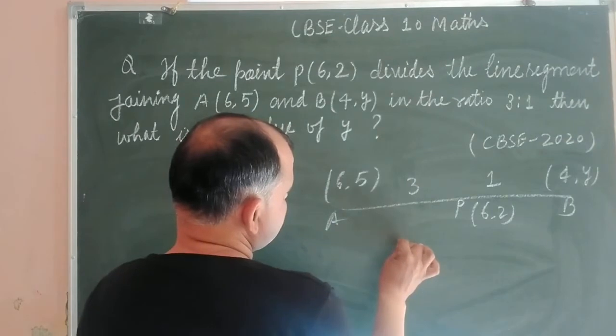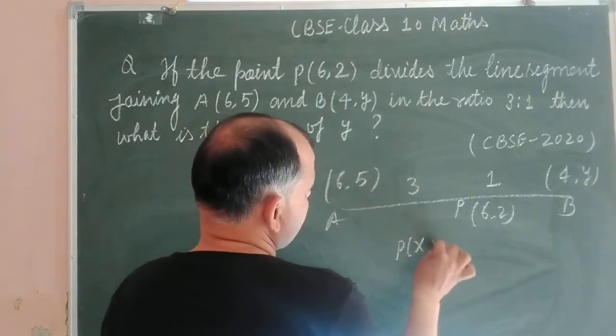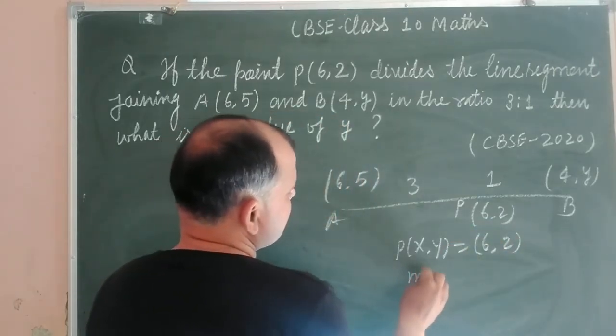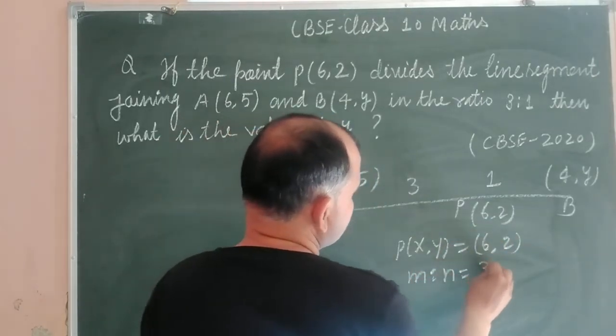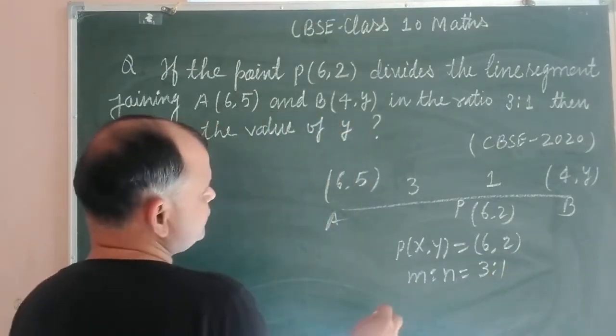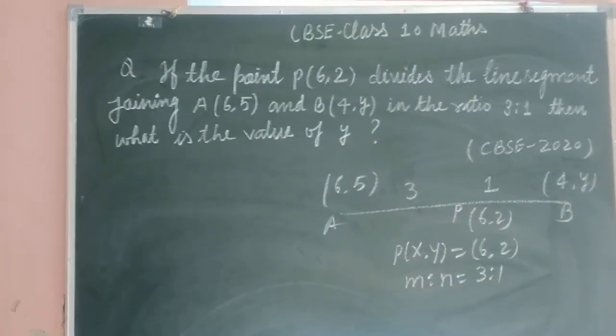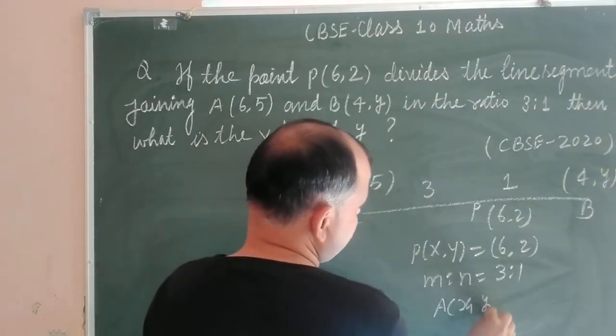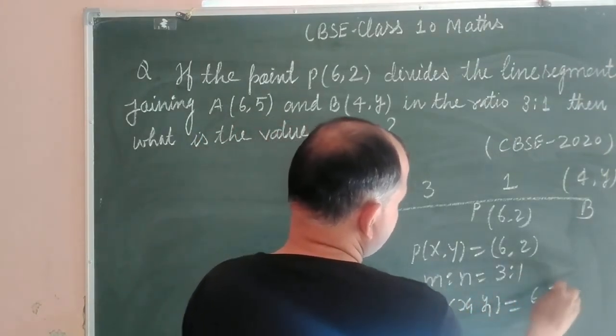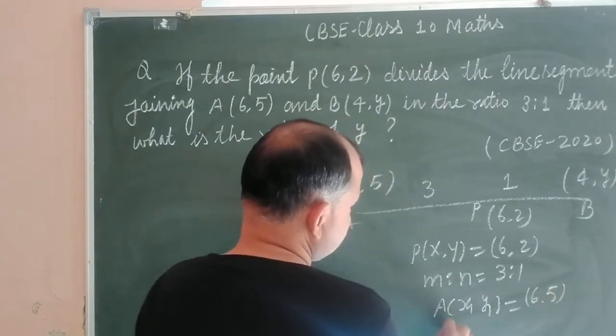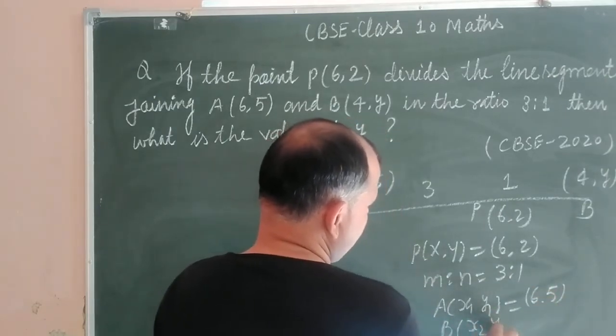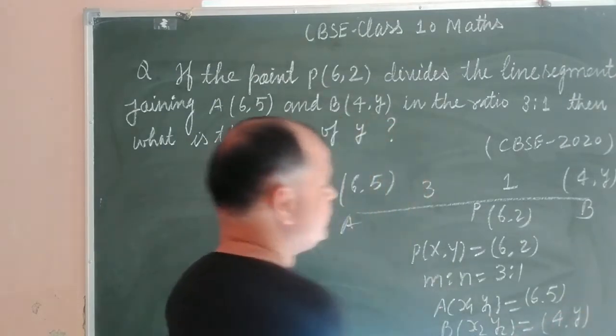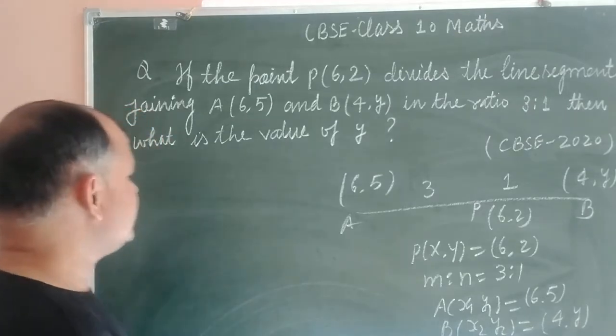Here we have given that P(X,Y) = (6,2) and the ratio m:n = 3:1. Point A, which is (X1,Y1) = (6,5), and point B, which is (X2,Y2) = (4,Y). From here we identify all the required points.